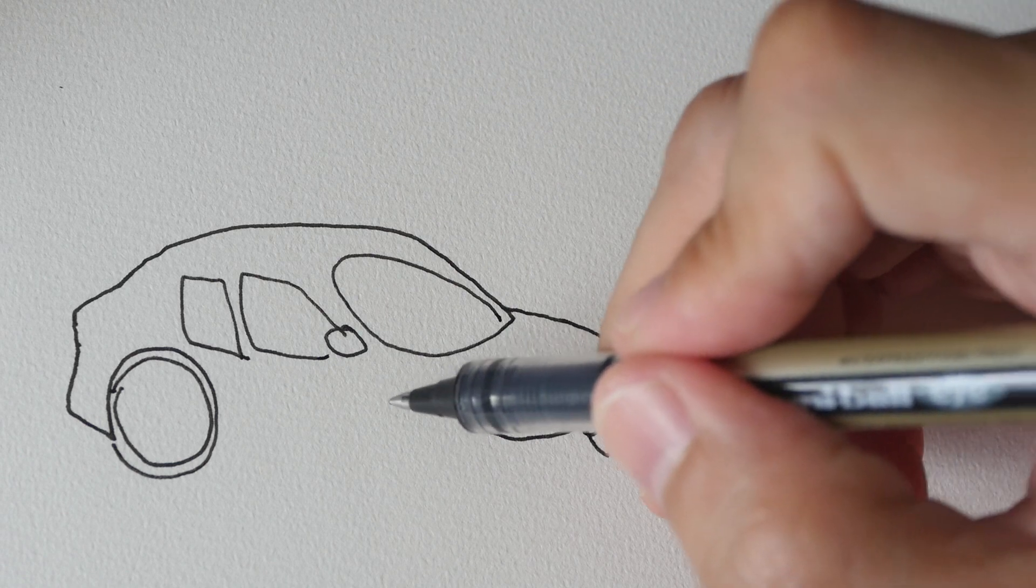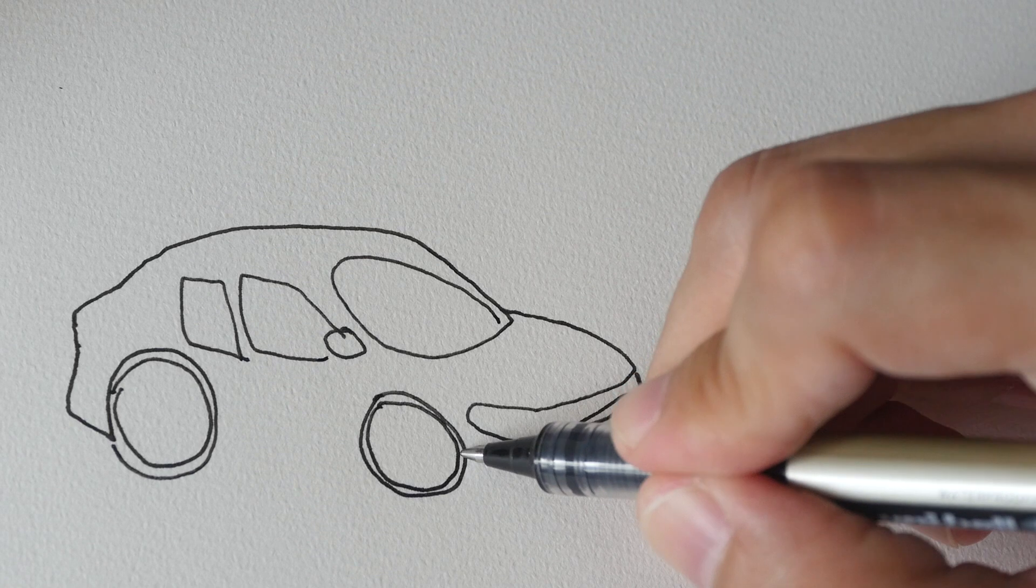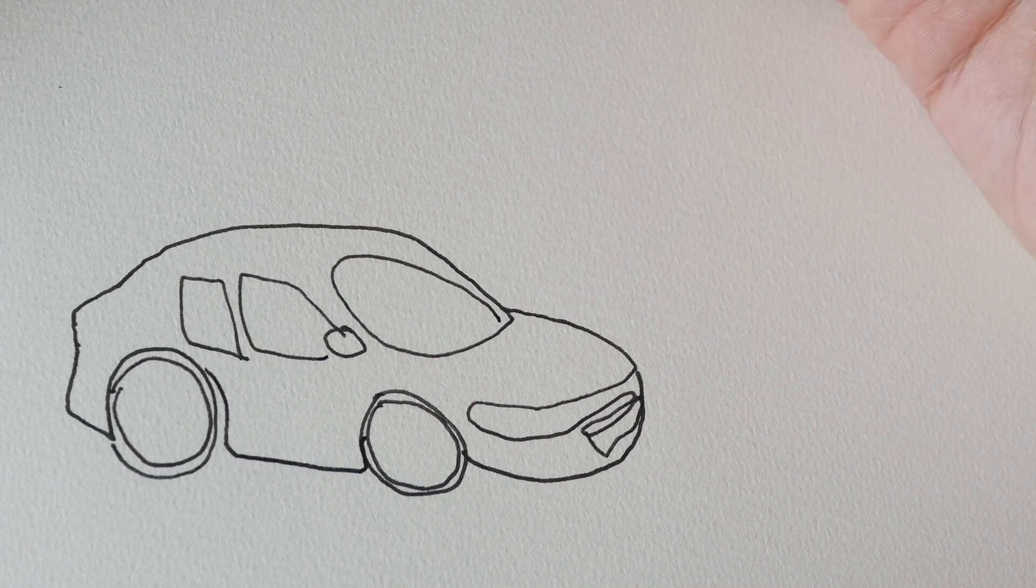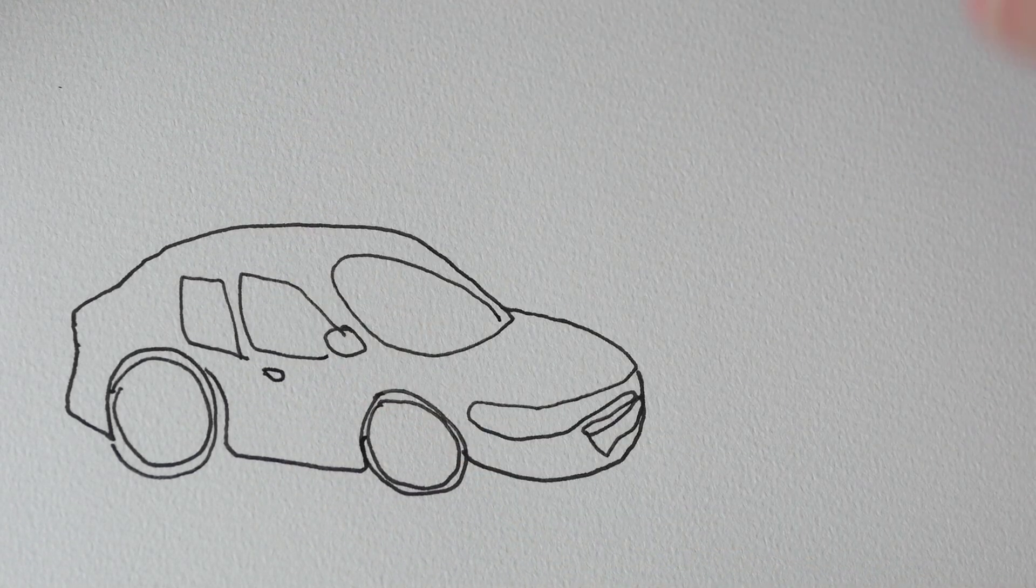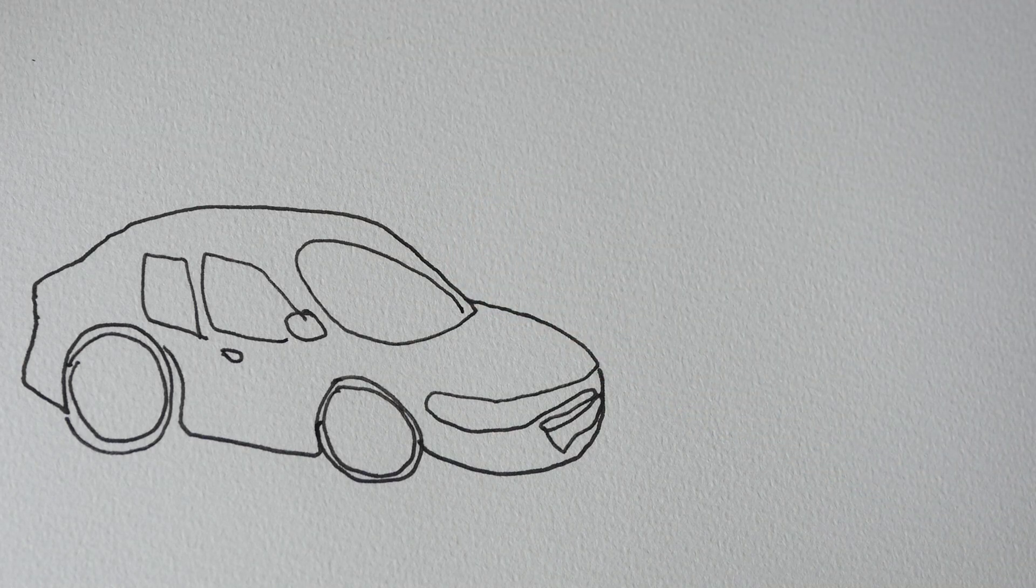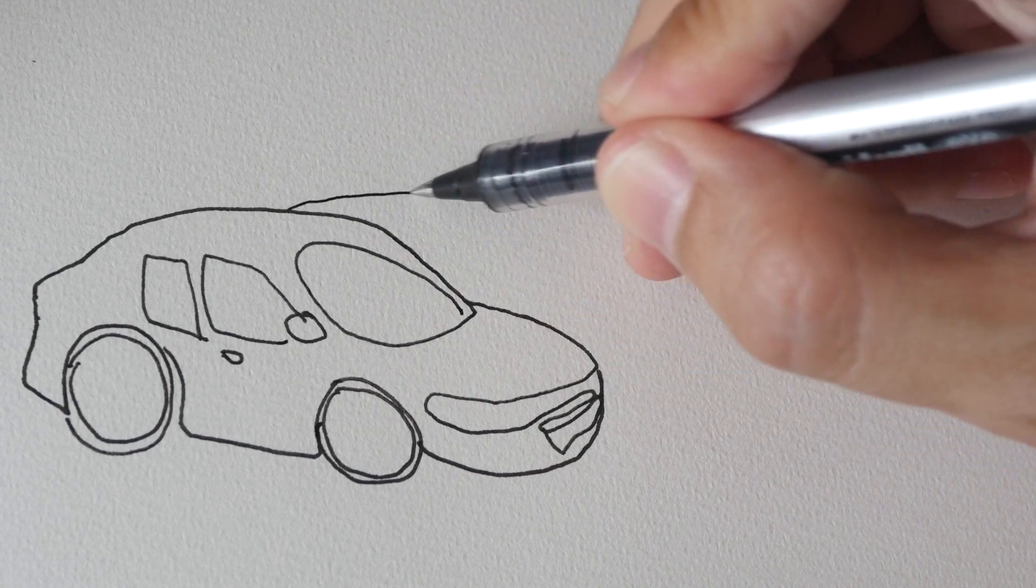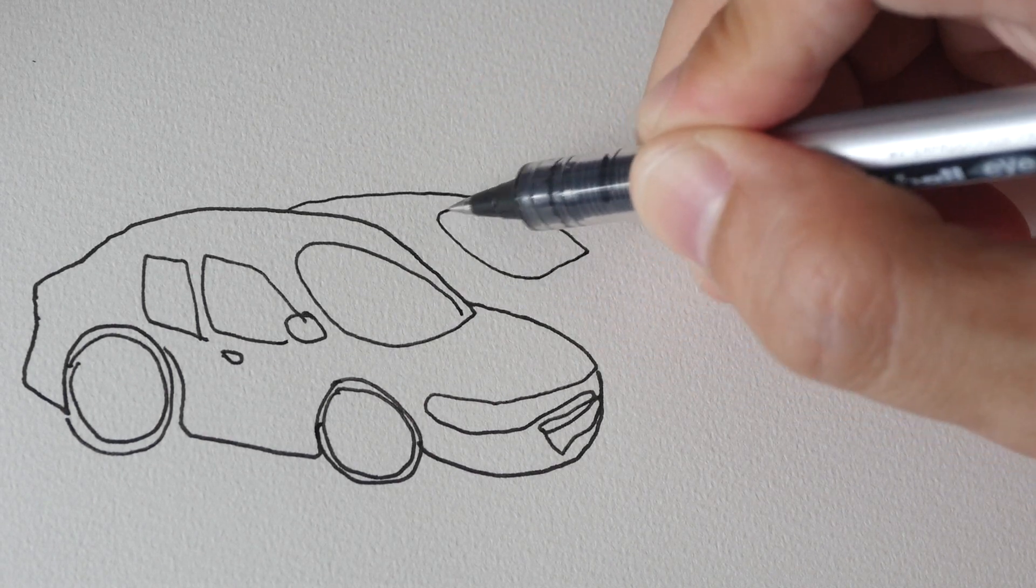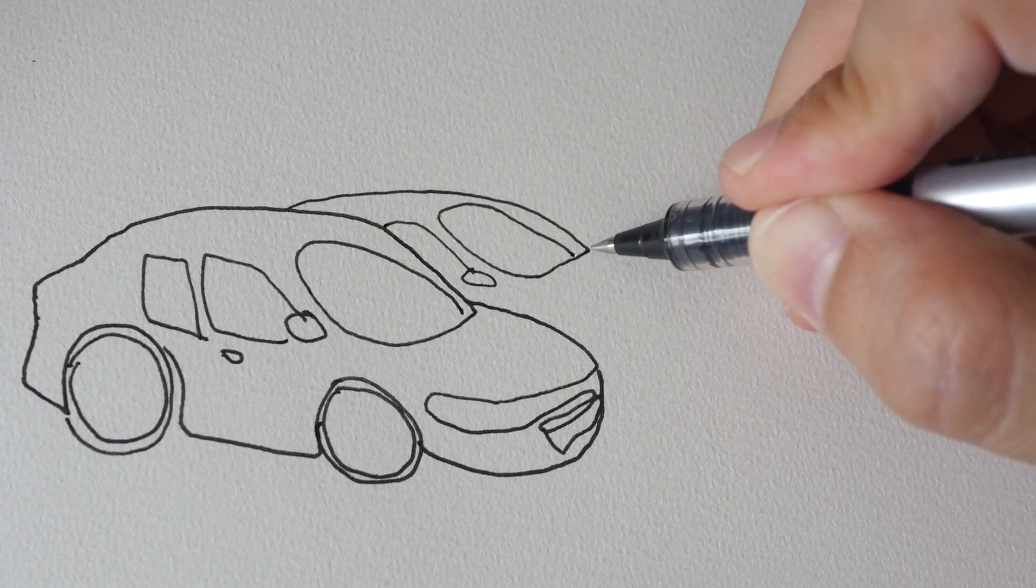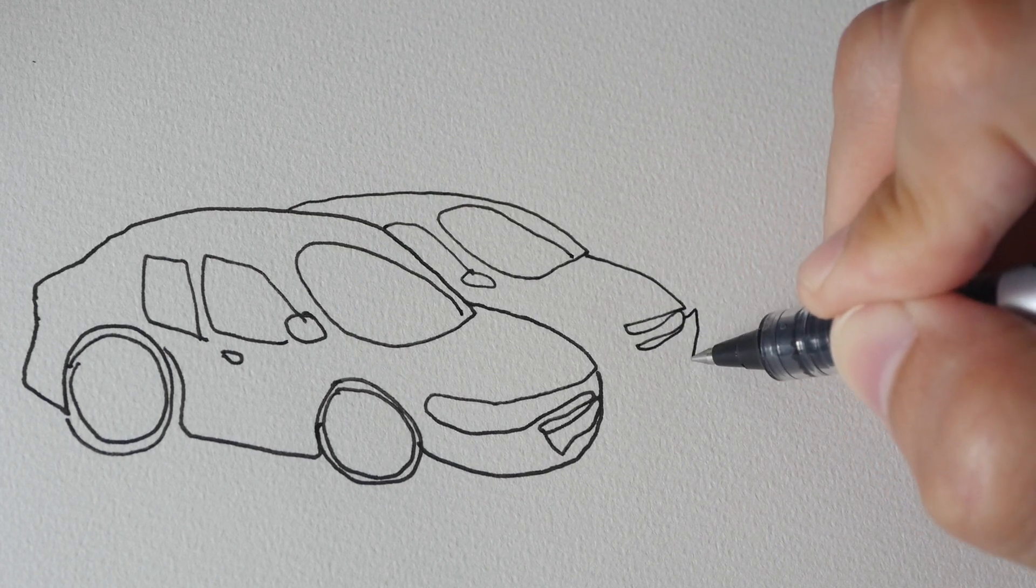So right now I'm using the 0.7 uniball eye pen drawing a car. It's not very accurate because I'm not very good at talking and drawing at the same time. But this is a 0.7. Let me switch over to the 0.5. The micro is a bit thinner. Just slightly thinner so you might not see too much difference when you compare it to the 0.7 but the difference is there. It's very subtle.